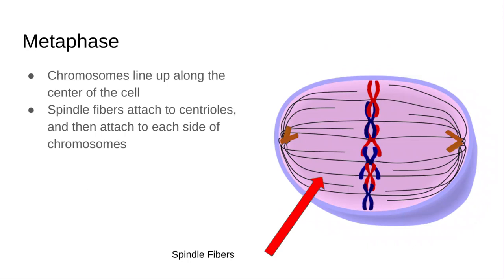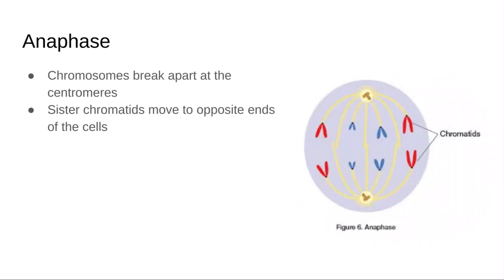In anaphase, these spindle fibers will basically take the chromosomes and the sister chromatids. Now, about sister chromatids—I'm going to go back to this other slide.